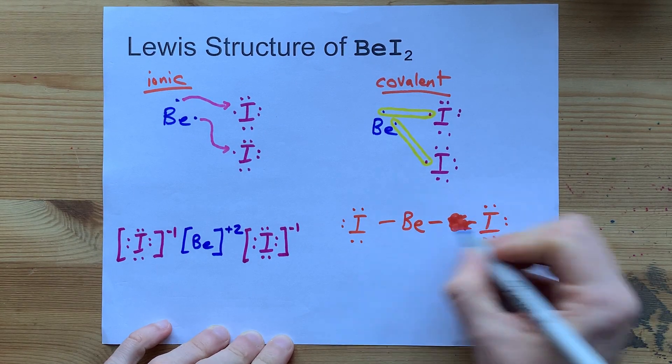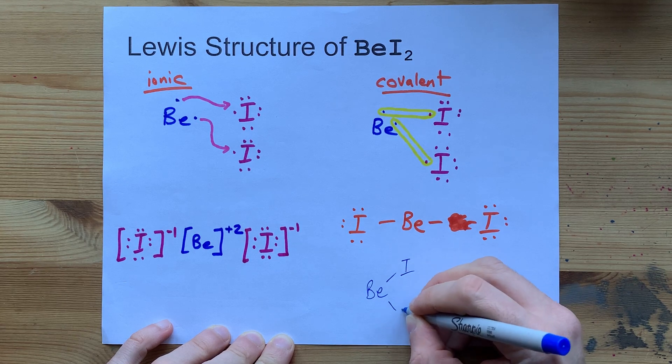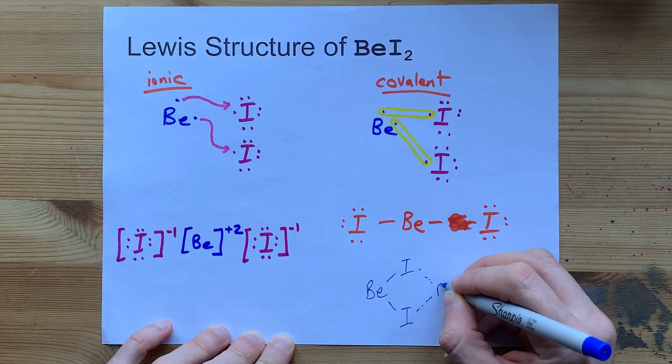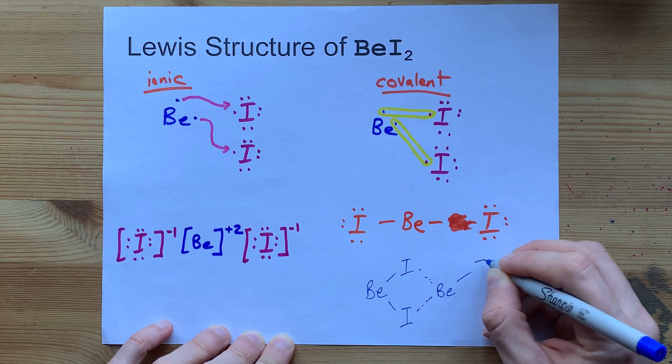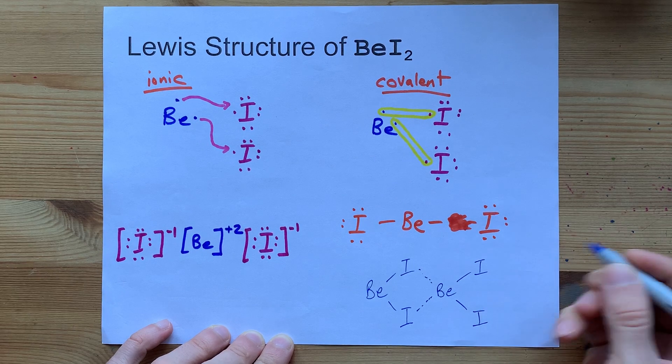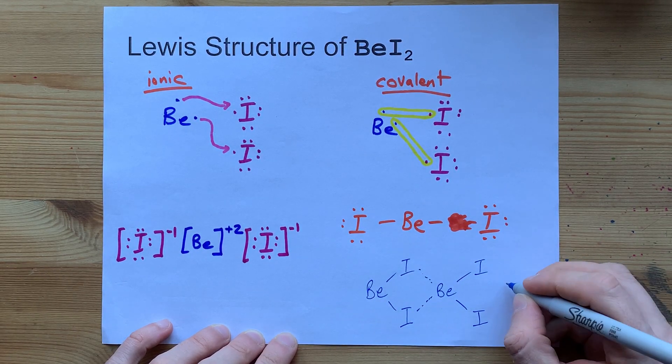When you actually have solid-phase beryllium iodide, the beryllium is bonded to both iodines, and then those iodines are attracted to the beryllium of a different beryllium iodide molecule. These bonds end up all being about the same strength, so it's more like a lattice of covalent bonds.